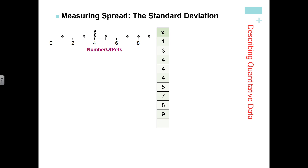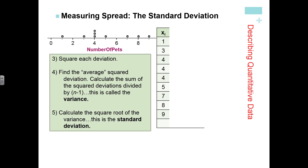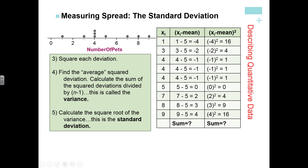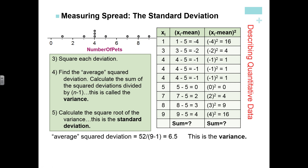Here again we have our distribution with our xᵢ values, which are just the observations. We take each of the deviations we calculated and we square them — negative four squared is 16, negative two squared is 4, and so on, giving us squared deviations. Once we find the squared deviations, we add them all up to get 52. Then we divide by n minus one — nine minus one — to get 6.5.